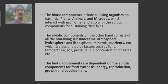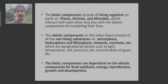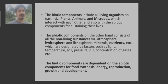We humans are also dependent upon oxygen for our survival and sustainability. That means we are interdependent with each other and the environment. The biotic components are dependent on the abiotic components for food synthesis — for example, photosynthesis — energy, reproduction, growth and development. Heterotrophs are those organisms which do not prepare their own food but are dependent on other living organisms.